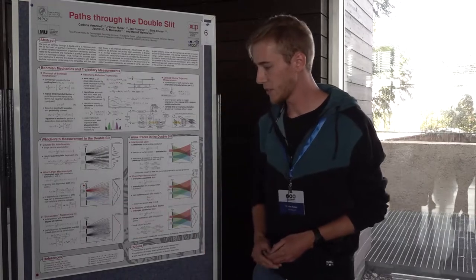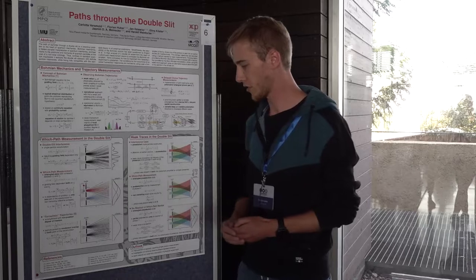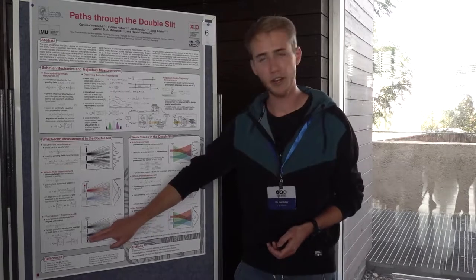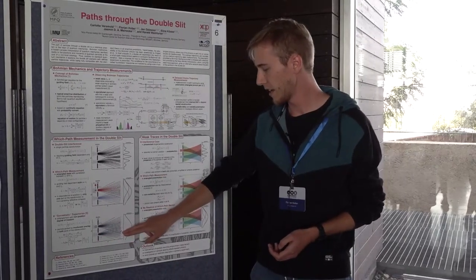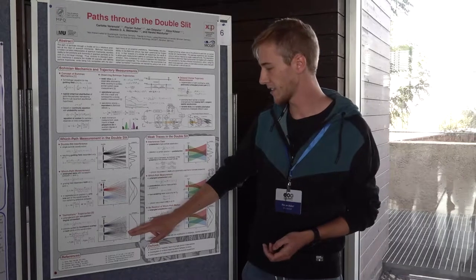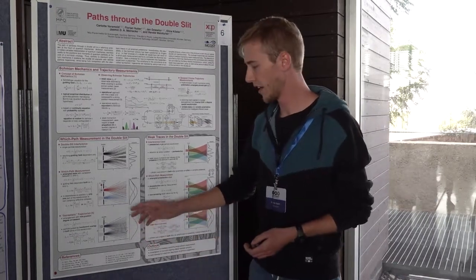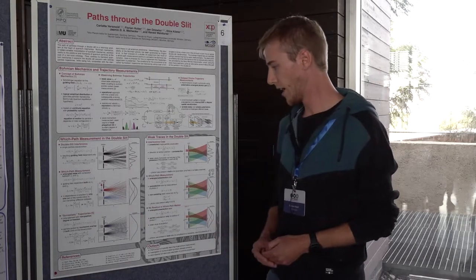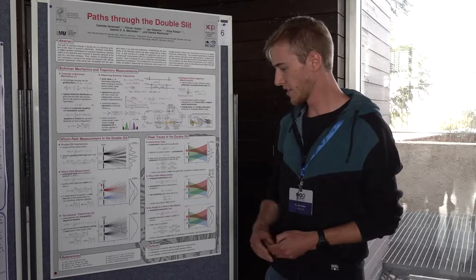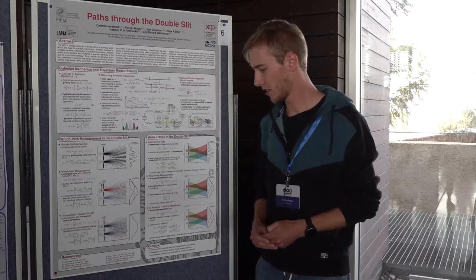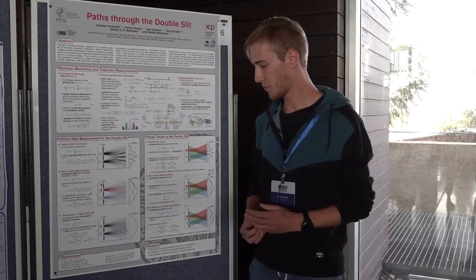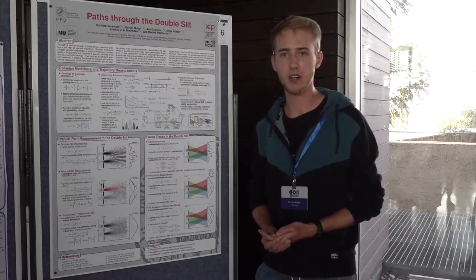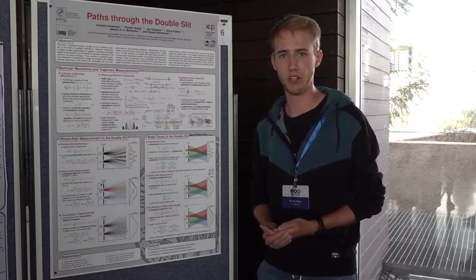In this case we recognize a rather strange behavior, because the Bohmian trajectories can tell us, for example, that the photon went through the lower slit. However, the polarization measurement can tell us that the photon had to be in the upper slit. In Bohmian mechanics this is not a problem, because the polarization information is a non-realistic feature and therefore is a bad marker for the which-path information.